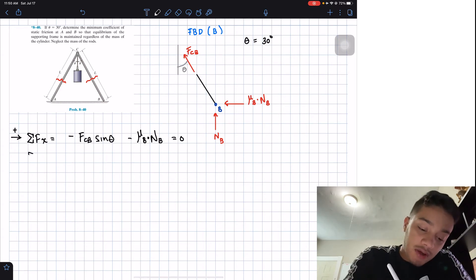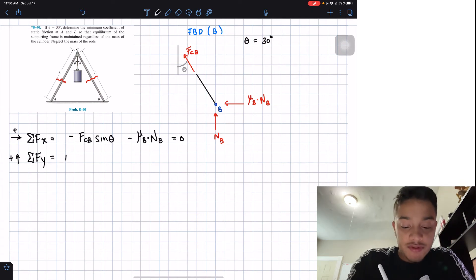We're going to apply also the summatory of forces in the y direction. Going up is positive. What do I have? Well, I have positive NB and then I have positive FCV, but the y component, which is going to be my cosine of theta. And all this should be equal to zero.